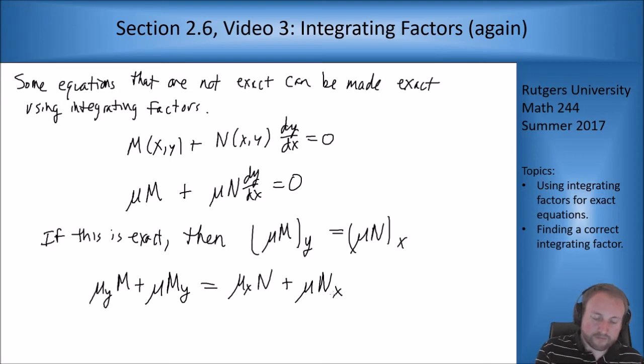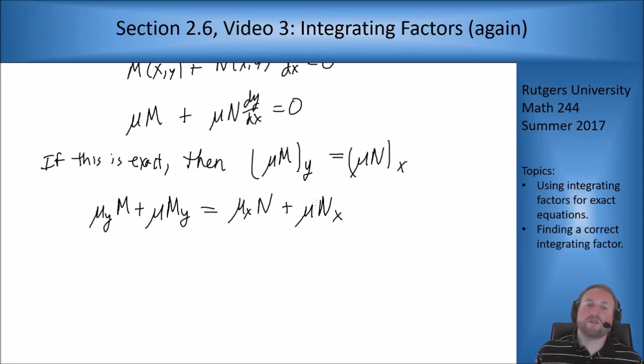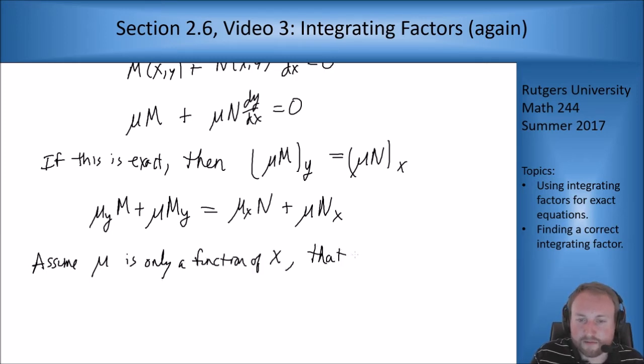So what we can do to make things a little better is when we're trying to find integrating factors, we can assume that maybe μ is only a function of x. This is an assumption we're making, so sometimes you won't be able to make this assumption. But in general, if you're trying to find an integrating factor, you'll be able to assume it's either a function only of x or only of y. So assume μ is only a function of x. That is, μ_y = 0. So if μ_y is 0, that term vanishes from the equation, and then I can solve this out.